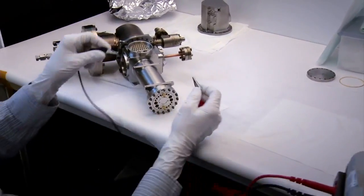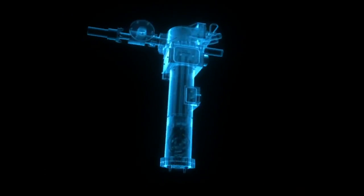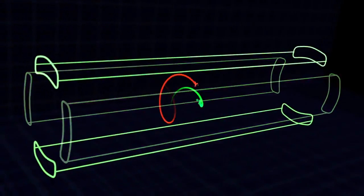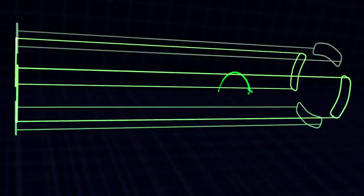This experiment is a quadrupole mass spectrometer with two ion sources designed to look at both neutral gases and ions in the upper atmosphere of Mars.